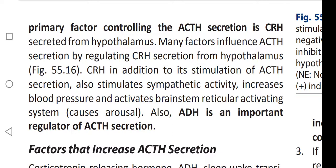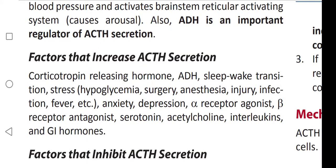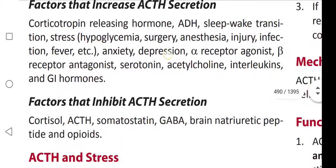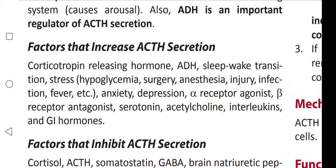Along with CRH, antidiuretic hormone is also an important regulator of ACTH secretion. Factors that increase ACTH secretion include: CRH, antidiuretic hormone, sleep-wake transition, stress, hypoglycemia, surgery, anesthesia, injury, infection, fever, anxiety, depression, alpha receptor agonists, beta antagonists, serotonin, acetylcholine, interleukins, and gastrointestinal hormones.